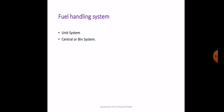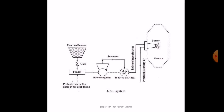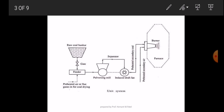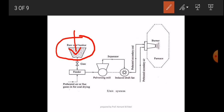Here you can see the unit system — what is the procedure, what is the working. This is the raw coal bunker; from the bunker we can feed coal. After this, here you can see a gate, so through the gate the coal is introduced into the feeder. Here you can see preheated air which is passing into the feeder.